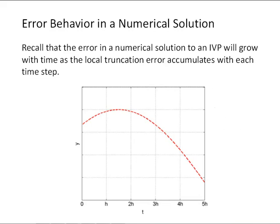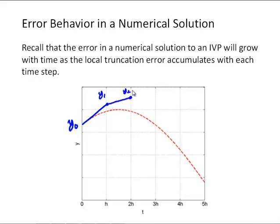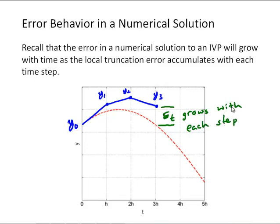Recall that the error in a numerical solution to an initial value problem will grow with time as the local truncation error accumulates with each time step. As we go forward in time from some y0, we use the slope at y0 to predict y1, the slope at y1 to predict y2, and the slope at y2 to predict y3, and so on. The total error grows with each step, due to the truncation error that accumulates as we calculate y at each step forward in time.